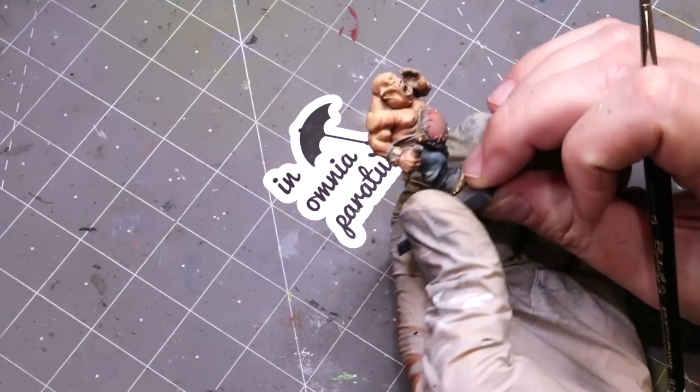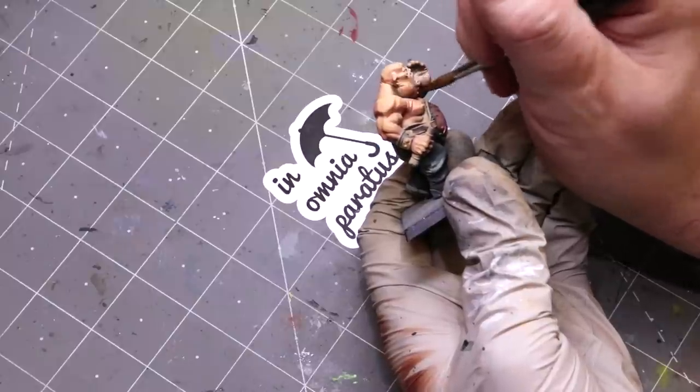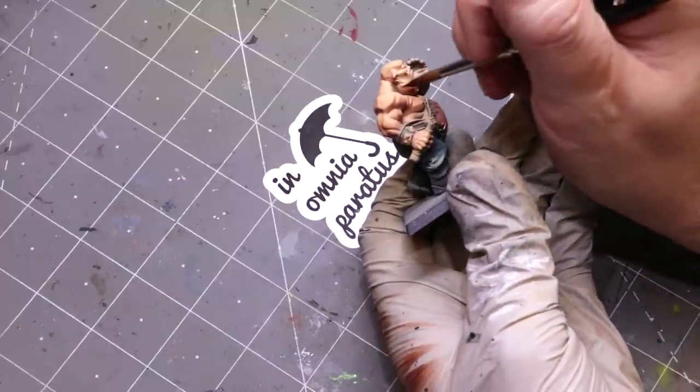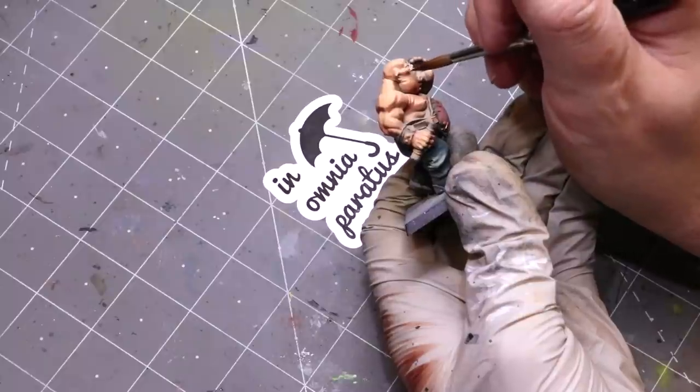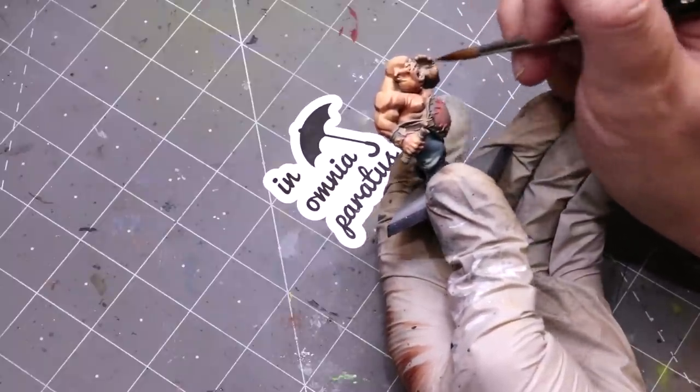When you get down onto things like the face, that's where you're really going to want to focus on that glaze and filter consistency. For example, I want to add some ruddiness to his big fat cheeks. This is where I'm working in a nice glaze consistency here.